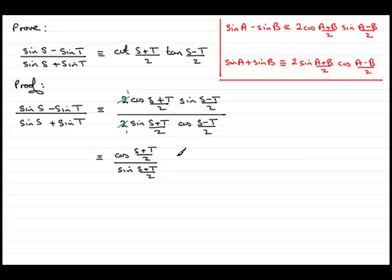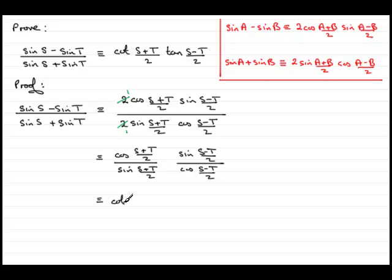Writing this out separately, we also have sine of S minus T over 2 divided by cosine of S minus T over 2, which is tan of S minus T over 2. So this becomes the tan of S minus T over 2. And cosine of S plus T over 2 divided by sine of S plus T over 2 is cot of S plus T over 2. So we have cot of S plus T over 2, multiplied by tan of S minus T over 2, which is what we had to prove.